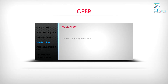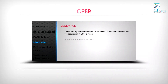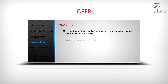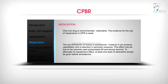Medication: Only one drug is recommended — adrenaline. The evidence for the use of vasopressin in CPR is weak. The anti-arrhythmic of choice is amiodarone. However, it can produce vasodilation and a reduction in perfusion pressure. This effect may be due to the solvents used: polysorbate 80 and benzyl alcohol. To attenuate its hypotensive effect, at least one dose of adrenaline should be given before amiodarone.